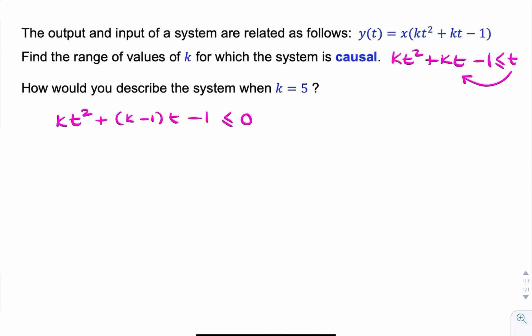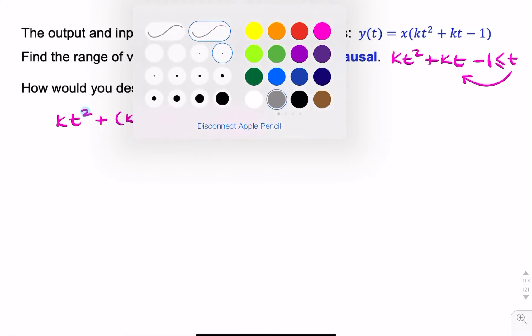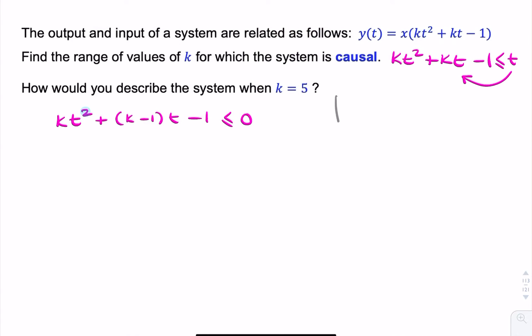So here we have a quadratic, t squared. And what does a quadratic look like? A quadratic will look either like that or like that, either an upwards opening or a downward opening parabola.